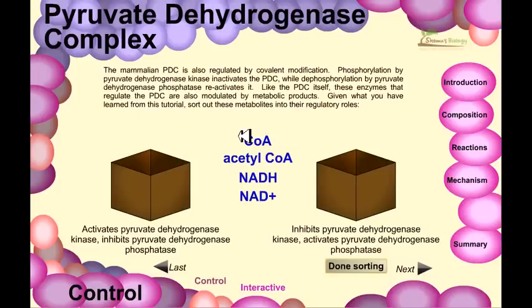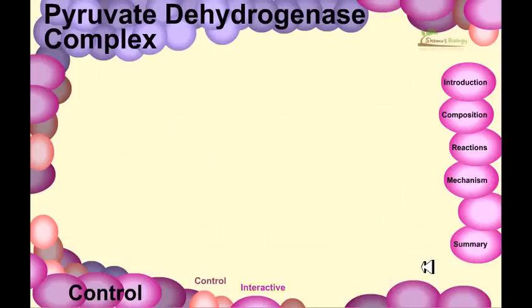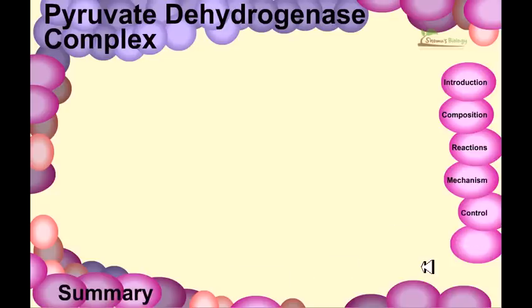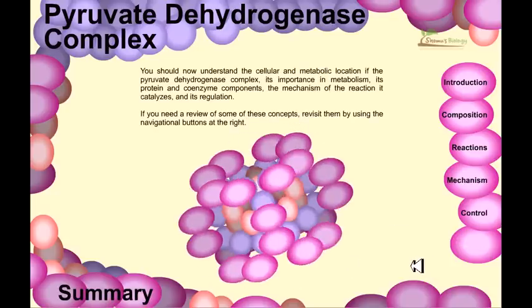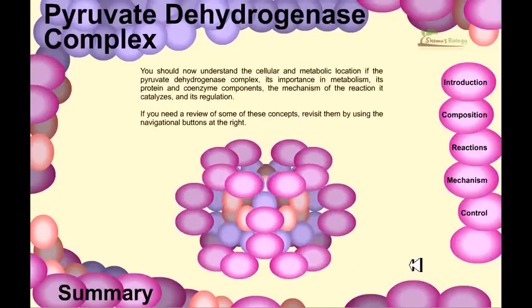This is the interactive process of how PDC is controlled and how it's not. We have discussed this very complicated step; we should understand the cellular metabolic location of the pyruvate dehydrogenase complex.